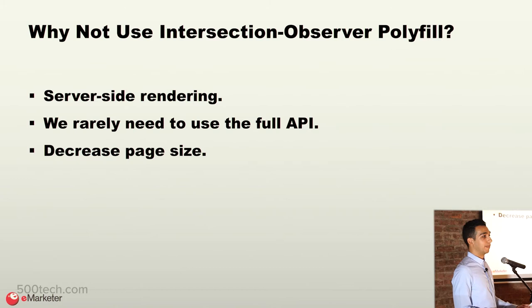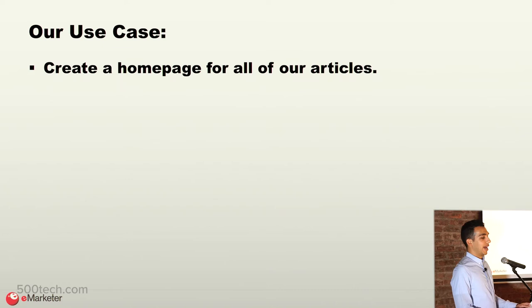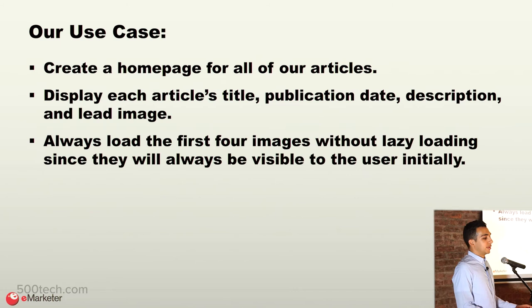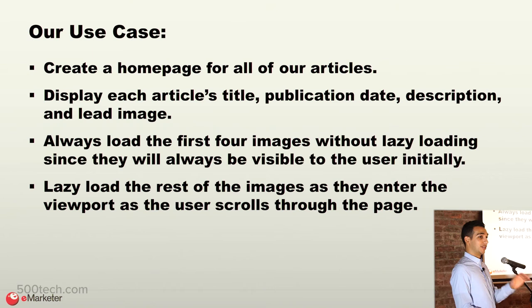Now let's look at a real use case we actually had at eMarketer. We had to create a homepage for all of our articles that we publish on a daily basis. For each article, we wanted to display the article's title, a publication date, description, and a lead image. We always load the first four images without lazy loading since they're always going to be visible to the user initially. Then, for the rest of the images that show up as the user scrolls down, we lazy load them as they enter the viewport.